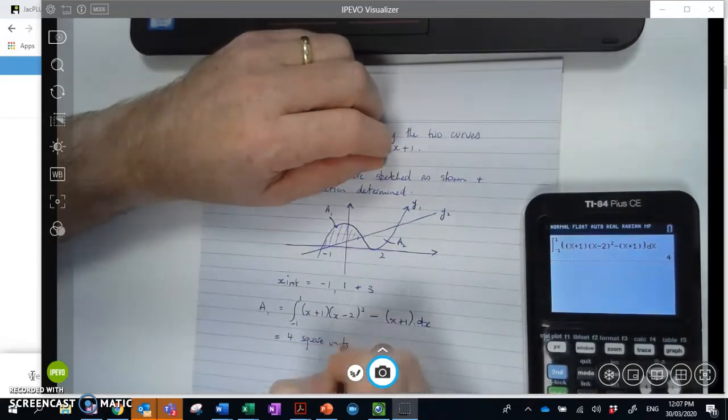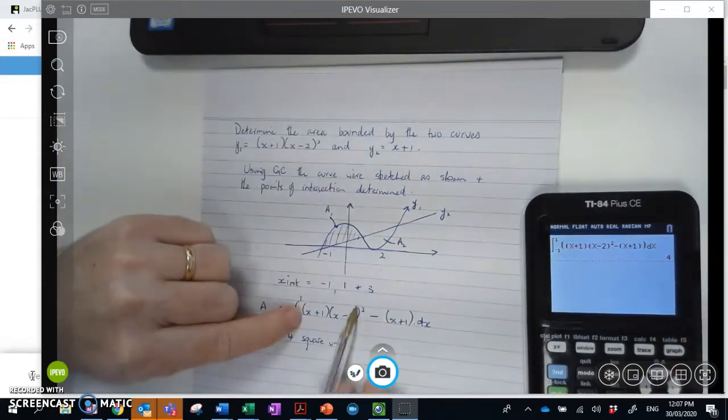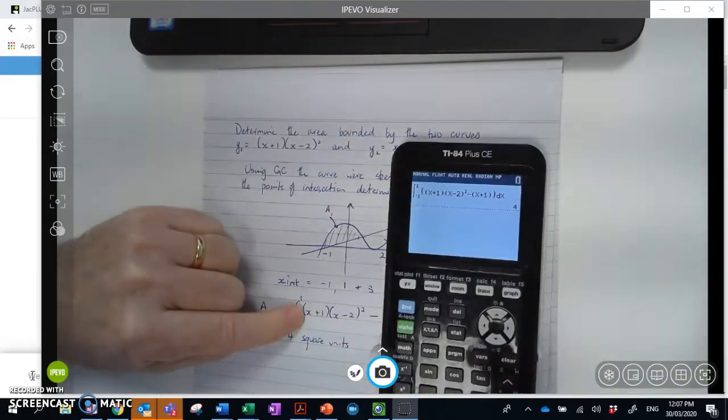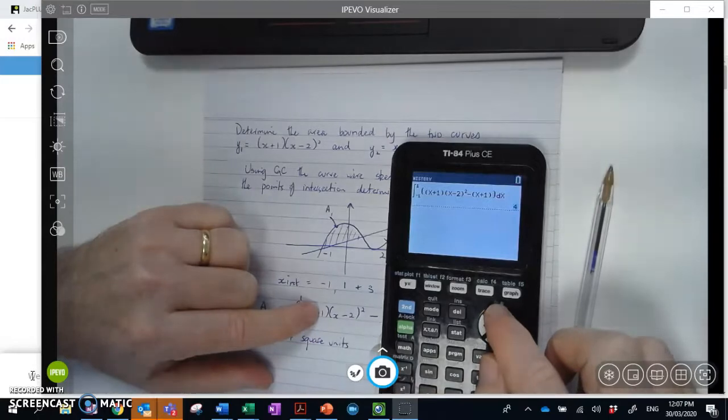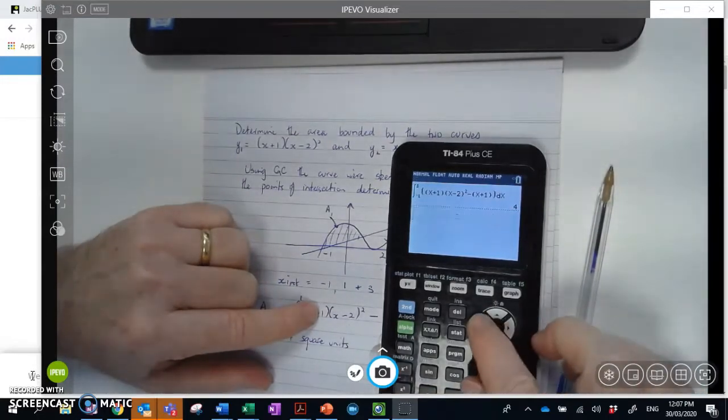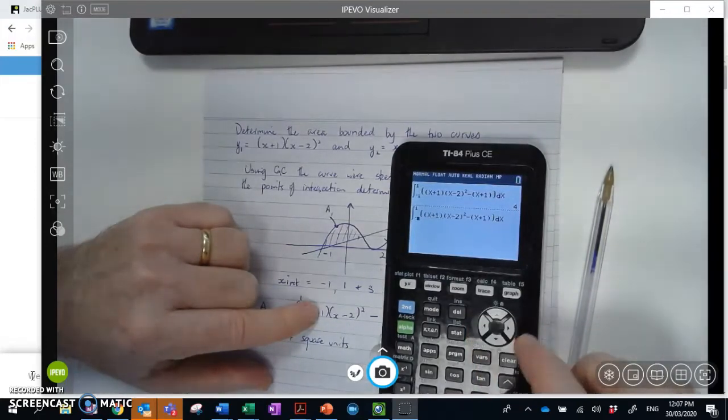And as predicted, we've got a positive value there of 4. And that's because I've actually taken the upper curve and I've subtracted the lower curve from it. So now I'm going to repeat this. And again, think about the shortcuts you can use. So I want pretty much the same equation. But this time my bounds are going to change. So I'll just go up and copy that.